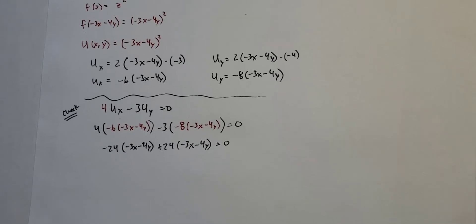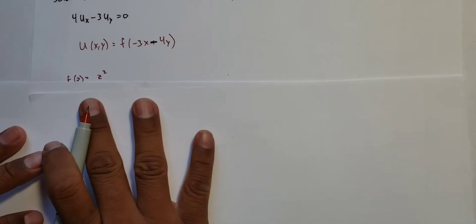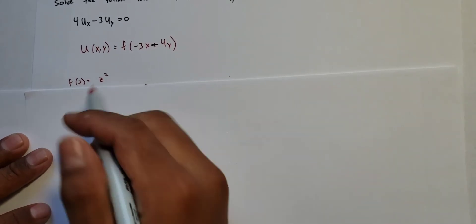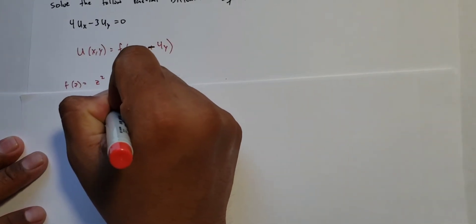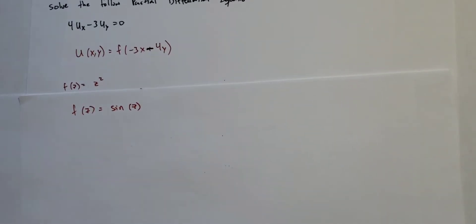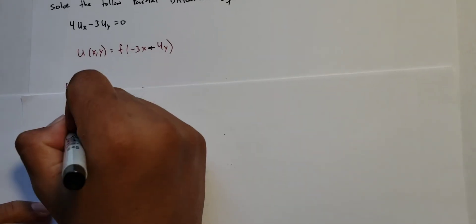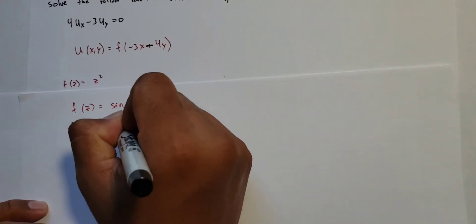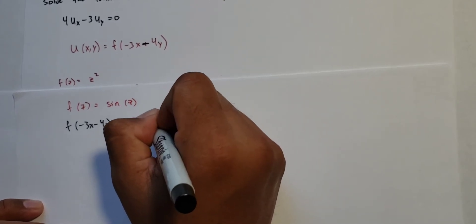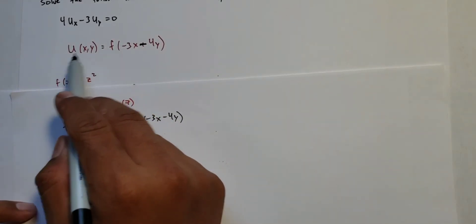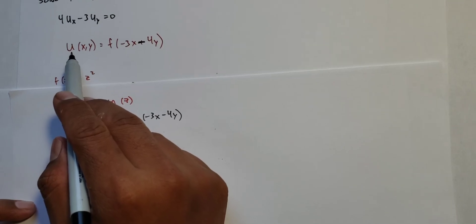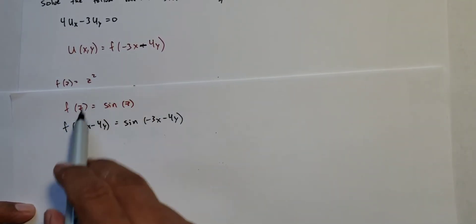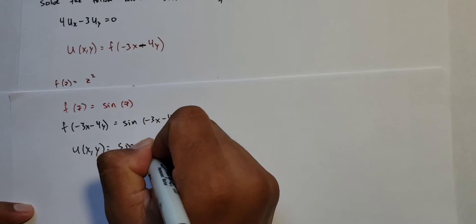So we'll see another example. This time, instead of f(z) = z², let's say f(z) = sin(z). We plug in −3x − 4y for z. Our solution is u(x, y) = sin(−3x − 4y). We're saying this function is actually a solution to this PDE.